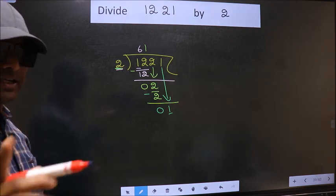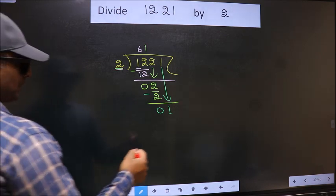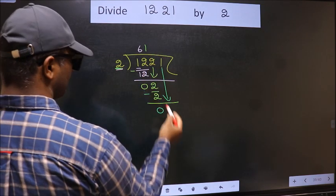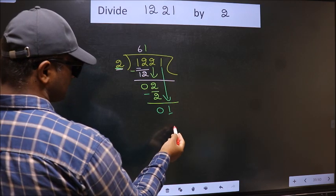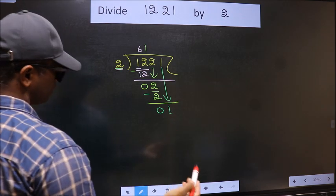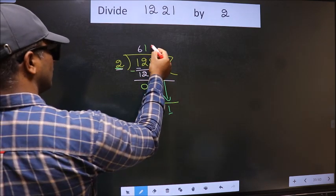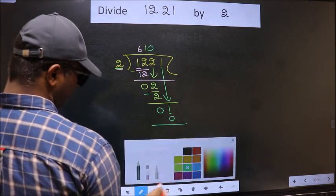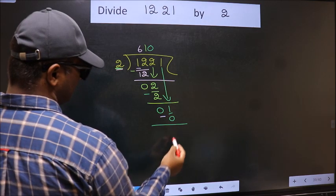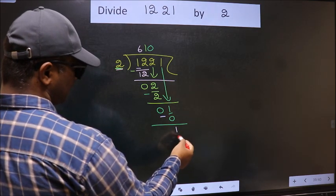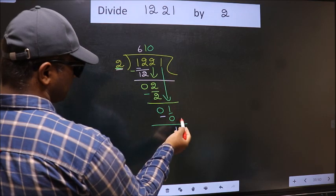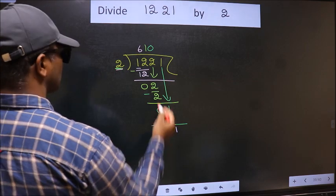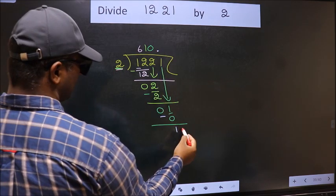Instead of that, what you should think of doing is which number should we take here? If I take 1, we will get 2. But 2 is larger than 1. So, what do we get here? We did not bring any number down. And 1 is smaller than 2. So, now we can put dot and take 0.